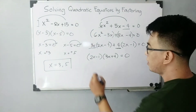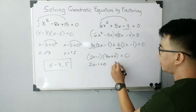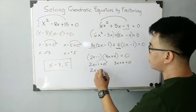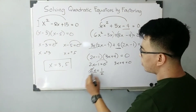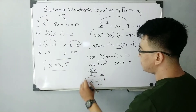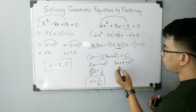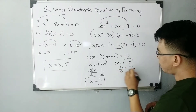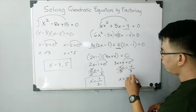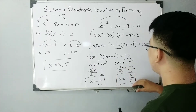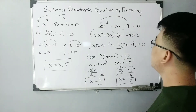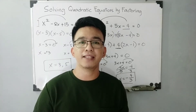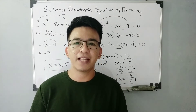Using zero product property: 2x minus 1 equals zero, and 3x plus 4 equals zero. From the first equation, 2x equals 1, so x equals one half. From the second equation, 3x equals negative 4, so x equals negative 4 over 3. These are the possible values of x for the equation 6x squared plus 5x minus 4 equals zero. If you're new to my channel, don't forget to like and subscribe, or hit the bell button to be updated on our latest uploads. Bye!